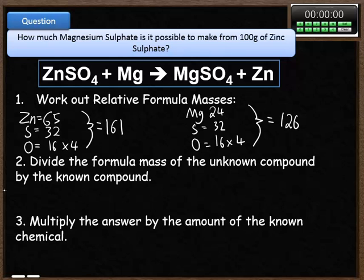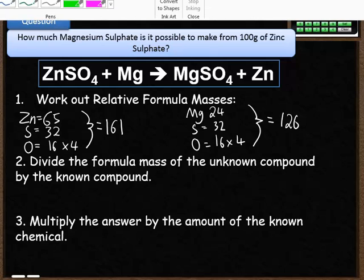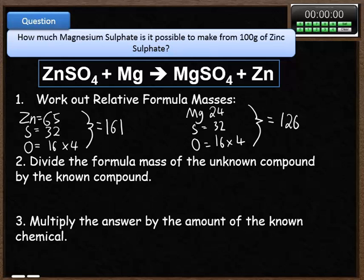So the first step is to work out the relative formula masses of both. I've shown you those there, 161 and 126. You then need to divide the formula mass of the unknown compound, which is going to be your magnesium sulfate, which would be 126. You divide that by the known one, which is zinc sulfate. I know I've got 100 grams of that, 161. And when I do 126 divided by 161, that works out at 0.78.